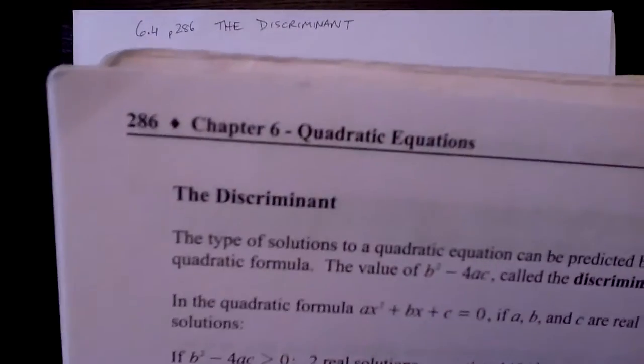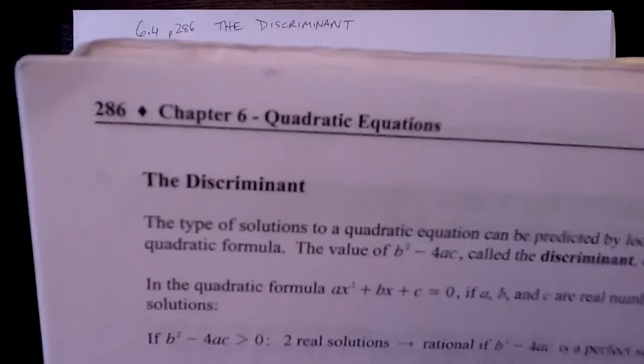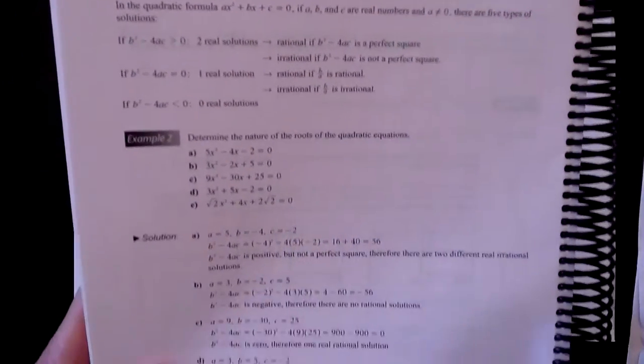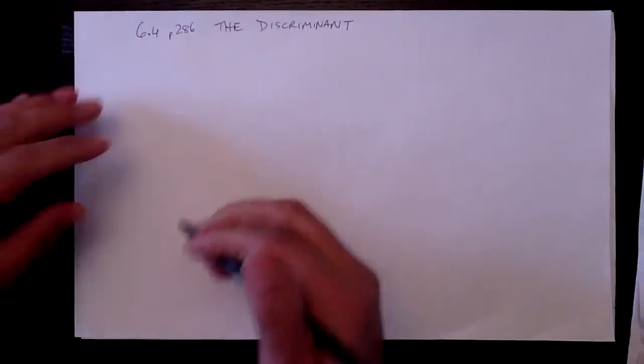The discriminant. Page 286. The discriminant is part of the quadratic formula. The book talks about all kinds of stuff that looks unreasonably complicated, so let's just toss that aside and make it simple for you.